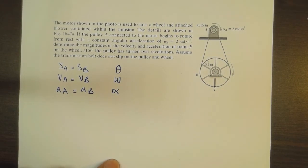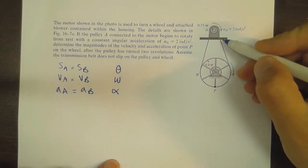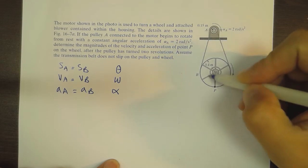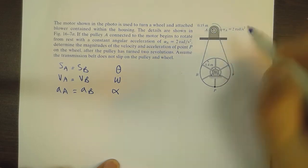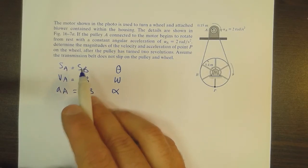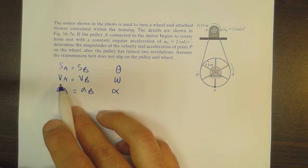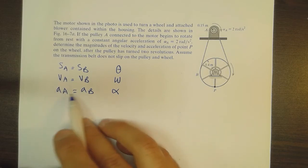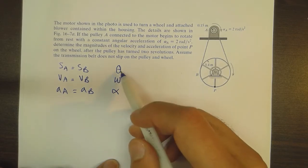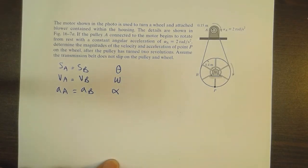What we should be aware of is that in terms of translation, things are the same for any point that moves along the belt passing through this wheel and the pulley. The translation S_A is equal to S_B, and the tangential velocity and tangential acceleration are also the same. The difference is only with the angular parameters — the angular displacement, angular velocity, and angular acceleration are all different.